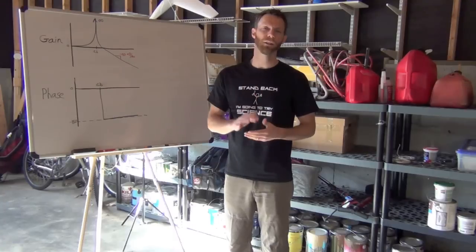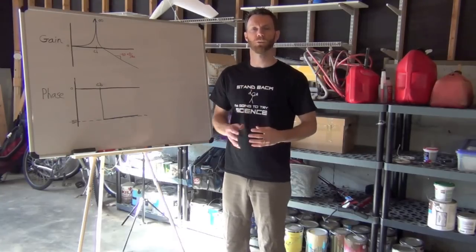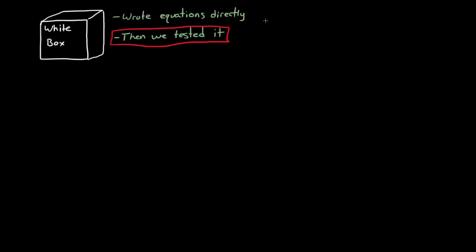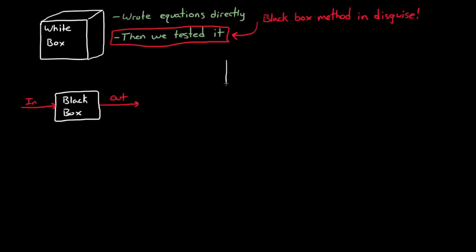Alright, before I end this video, there is just one other thing. I just want to kind of tie it all together. So in order to do that, we'll go back to the blackboard. Now you might be thinking at this point, we just spent the entire video on the white box method. And that's because since we knew we were dealing with a spring and mass system, we were able to write the equations of motion directly. And then after we developed those equations, we were able to go and test them. But what's interesting is that we actually performed the black box method when we tested our equations of motion. Now recall with this method, we don't actually know what's inside the black box. So we have to subject it to various inputs and measure the output and see if we can deduce what's inside the box through that way.